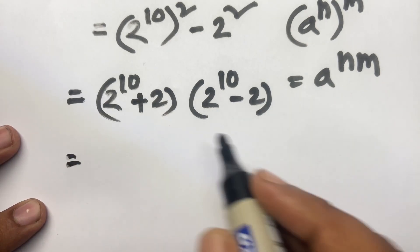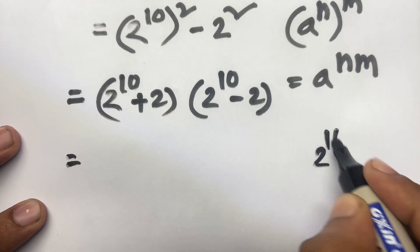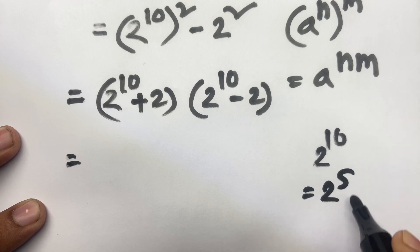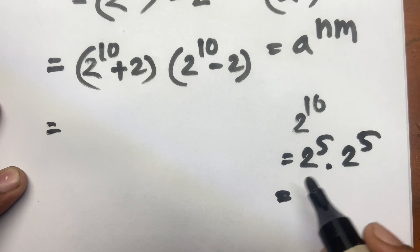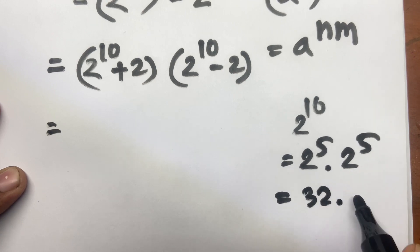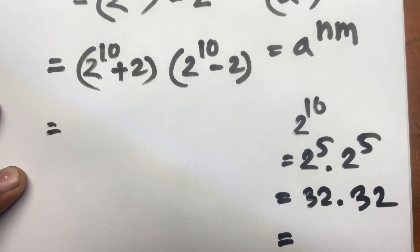We know that 2 to the power 10 equal to 2 to the power 5 times 2 to the power 5. And we know 2 to the power 5 equal to 32 times 32. 32 times 32 equal to 1024.